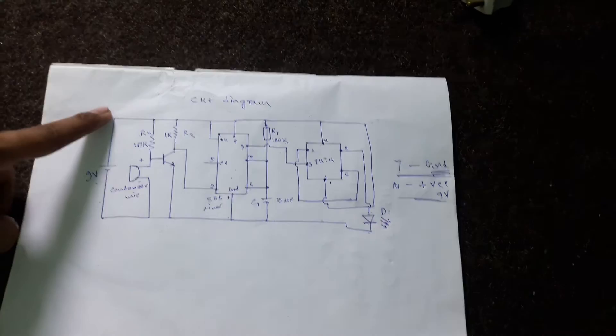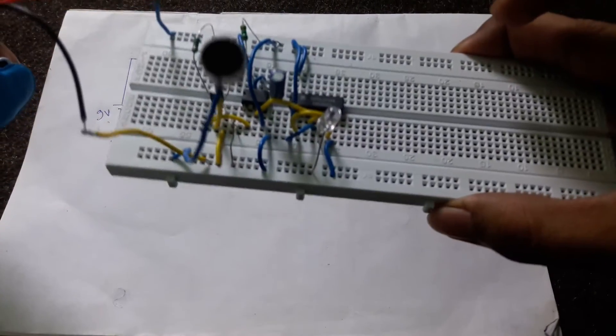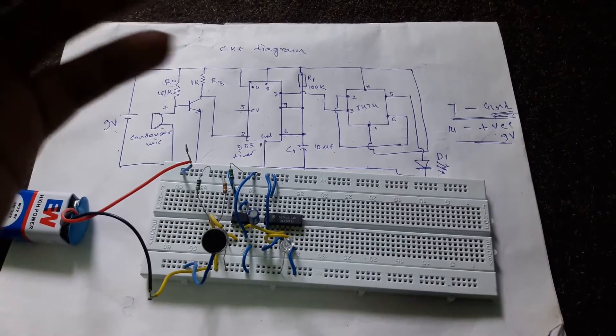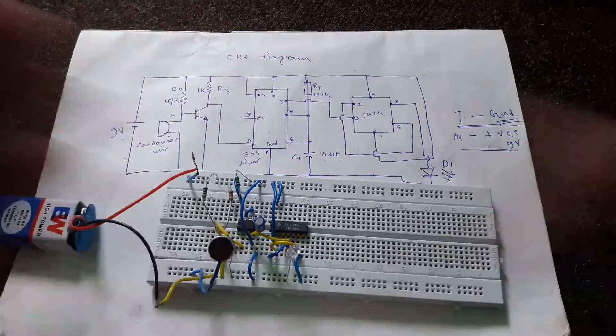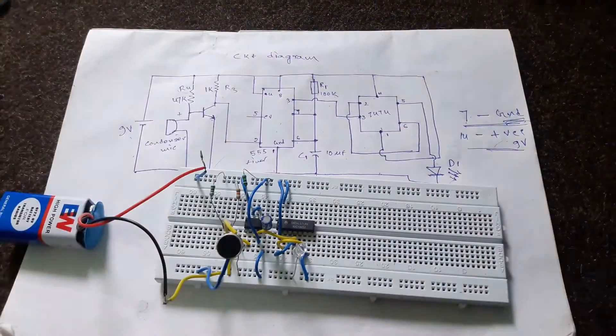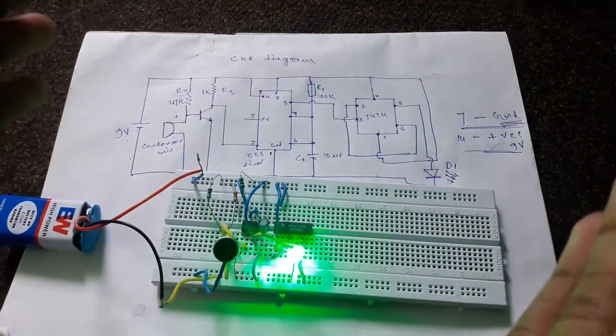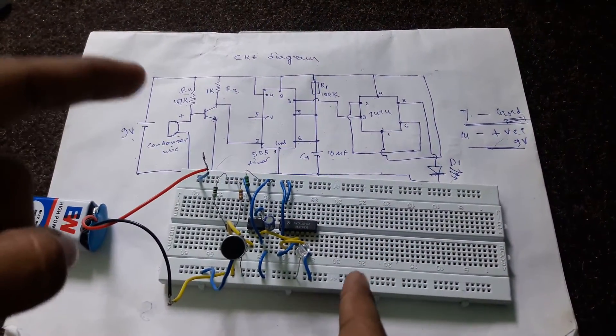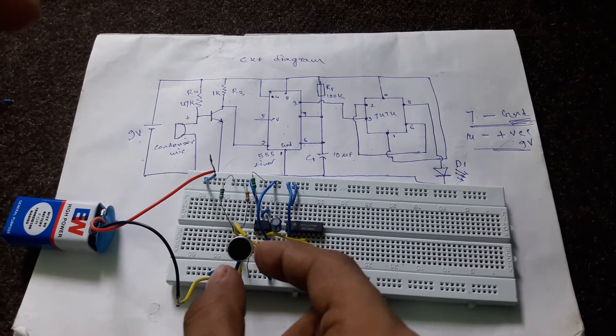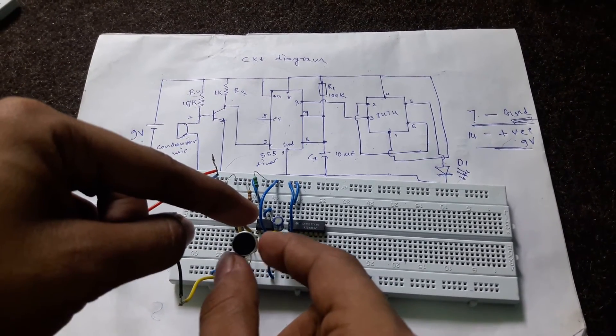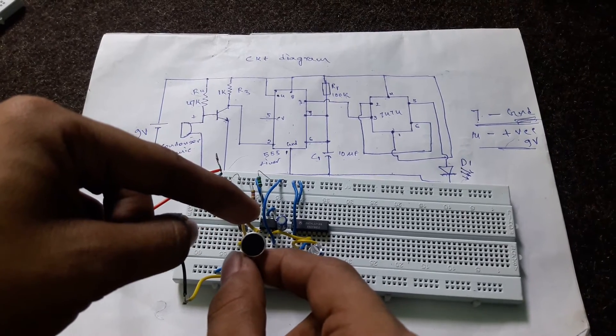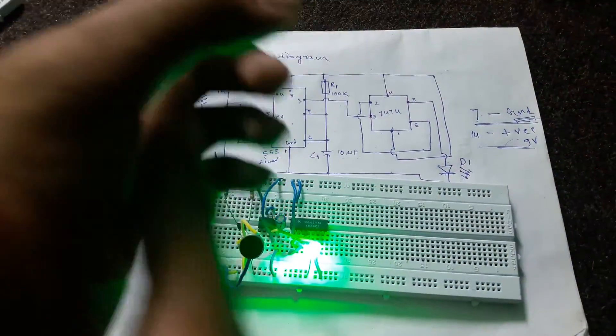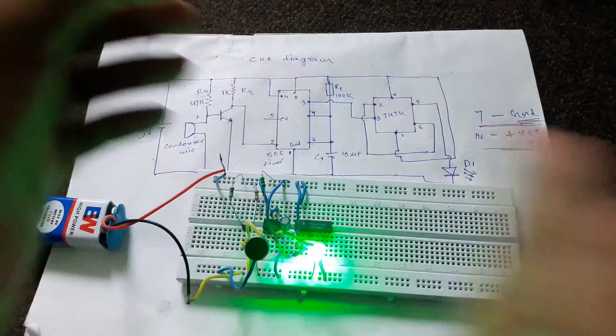You can see I made the circuit according to the circuit diagram I mentioned. Let's see whether it works or not. You can see there are some disturbances - this is happening due to the condenser mic. The better the condenser mic, the better the output. Now you can see it is working.